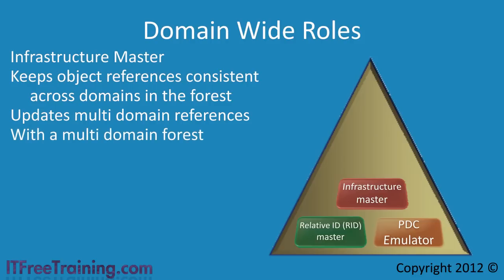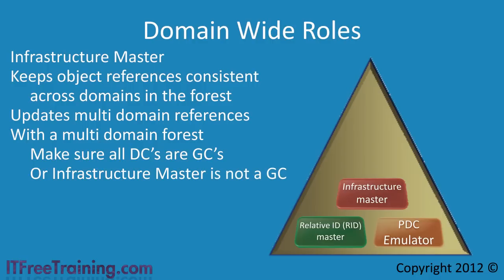If you are using multiple domains, you need to consider the following when placing your infrastructure master. In a multi-domain environment, the infrastructure master updates references to multi-domain objects when changes occur. If the domain controller holding the infrastructure master role is a global catalog server, this can cause problems. This occurs because when the infrastructure master finds a change, it refers to the local global catalog which will always be up to date. Since the infrastructure master thinks the change has already been made, it will not notify any other domain controllers that a change has occurred. To fix the problem, ensure that all domain controllers in the forest are global catalog servers so they always have up-to-date changes. If you cannot do this, make sure the infrastructure master is not a global catalog server.